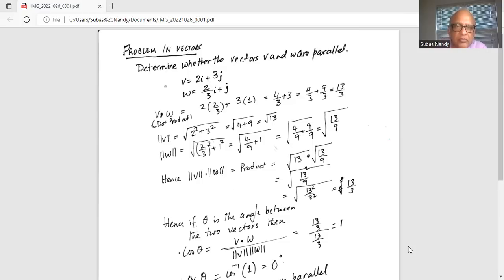We multiply the coefficients of i and we add it to the coefficients of j. So it's 2 times 2/3 plus 3 times 1, which equals 4/3 plus 3, which is 4/3 plus 9/3. So the denominators are the same. So 4 plus 9 is 13/3.